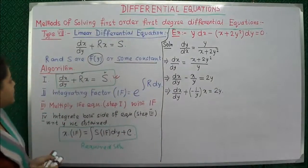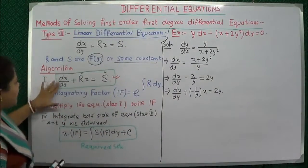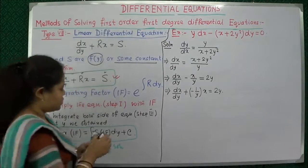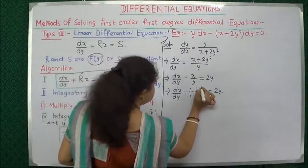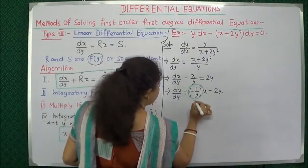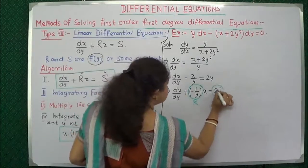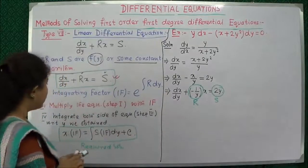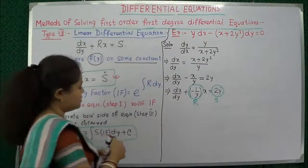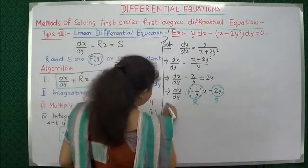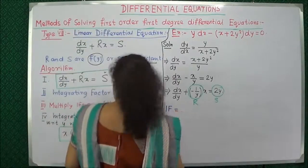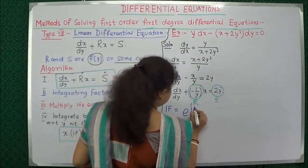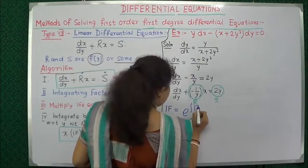The equation is now in the form d/dy of x plus R·x equals S. So here R equals minus 1/y and S equals 2y. From this we write down the integrating factor for this equation: I.F. equals e to the power of the integration of R dy, which is e to the power of the integration of (minus 1/y) dy.